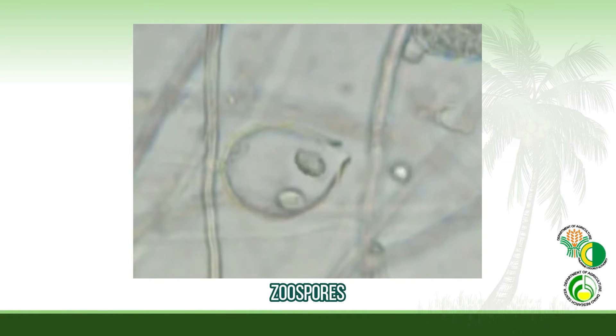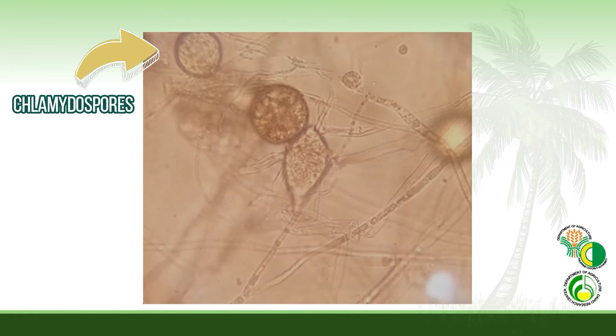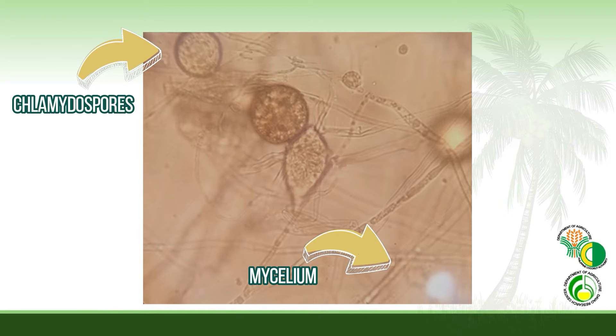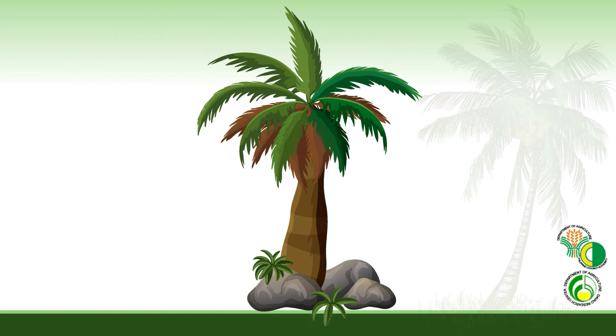The fungus survives and is transported as zoospores, chlamydospores, and mycelium. It may be present in the soil, in the frond base, or in the basal part of the crown.